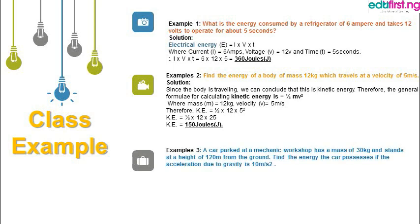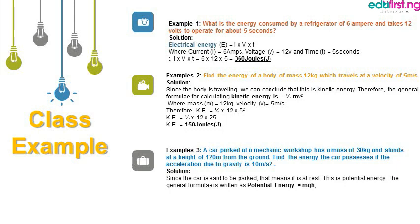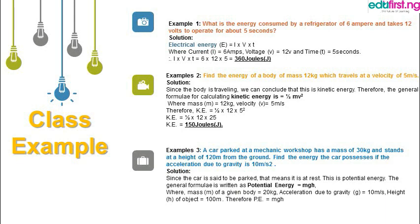The third example: a car parked at a mechanic workshop has a mass of 30 kg and stands at a height of 120 meters from the ground. Find the energy the car possesses if acceleration due to gravity is 10 m/s². Since the car is parked, we're looking for potential energy. PE = mgh. Substituting m = 30 kg, g = 10, and h = 120 gives us 36,000 joules, or 36 kilojoules, as the potential energy of the body.